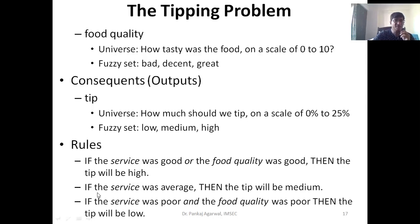We have already defined the ranges of these inputs. We can make a rule like: if the service was average, then the tip will be medium. And if the service was poor and food quality was poor, then the tip would be low. So this is a very fair simplification of the system.